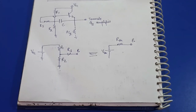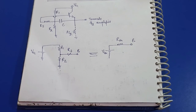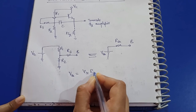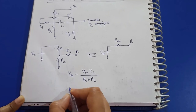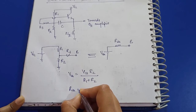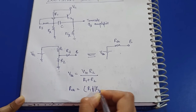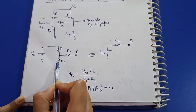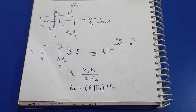Now replacing with the Thevenin equivalent circuit: the voltage source is in series with the resistor. The Thevenin voltage Vth is given by VCC × R2 / (R1 + R2). The Thevenin resistance Rth is the parallel combination of R1 and R2, plus the series combination of R3. That's how we calculate the Thevenin equivalent for the DC analysis of the bootstrap biasing circuit.